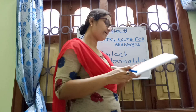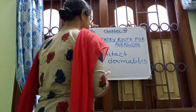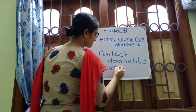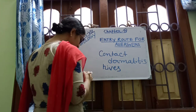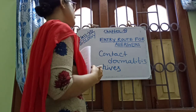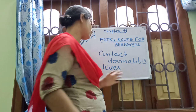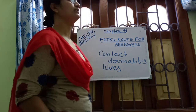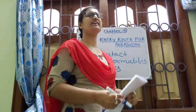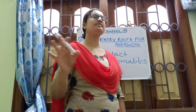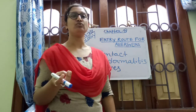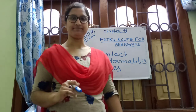Sometimes when allergens enter the body, red itchy patches form on our skin. This is called hives — red itchy patches on our skin. All of these conditions are included under the skin entry route. So the three main entry routes are: nose, mouth, and skin.